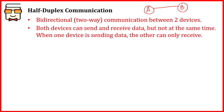In half duplex communication, it is like two friends or colleagues talking — at any point in time, one can speak, and at another given point, the other can speak. A good example is walkie-talkie: when you say something, you give some information and say 'over and out,' and then the other person's walkie-talkie allows them to give their message. So both devices can send as well as receive data, but at any given point in time, only one-directional communication will be happening.